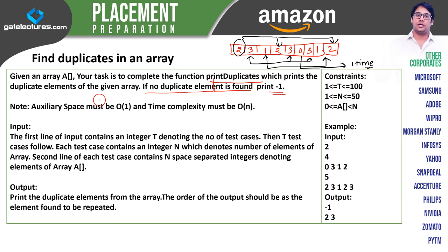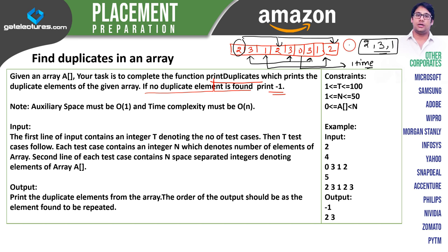So the job is to find duplicate elements. What are the duplicate elements? They are 2, 3 and 1. And 0 is not coming 2 times, it is only coming 1 time. So the duplicate elements are 2, 3 and 1, and there is only one element coming just 1 time.